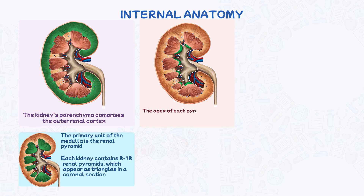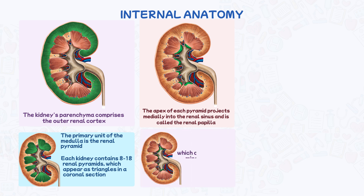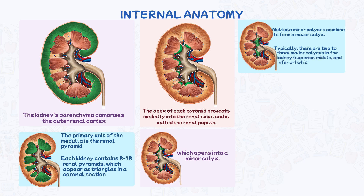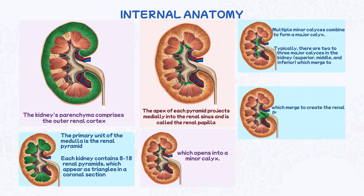The apex of each pyramid projects medially into the renal sinus and is called the renal papilla, which opens into a minor calyx. Multiple minor calyces combine to form a major calyx; typically there are two to three major calyces in the kidney — superior, middle, and inferior — which merge to create the renal pelvis.